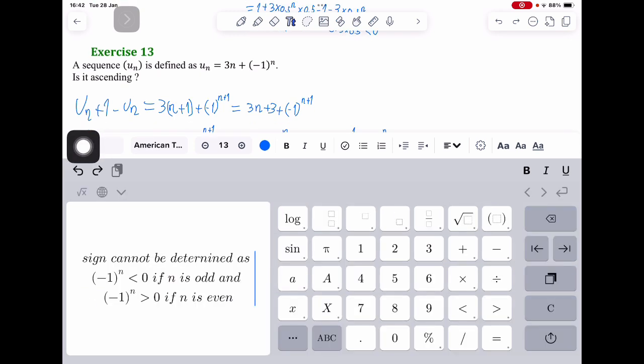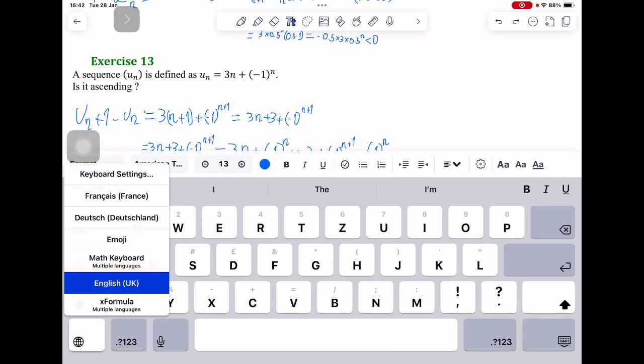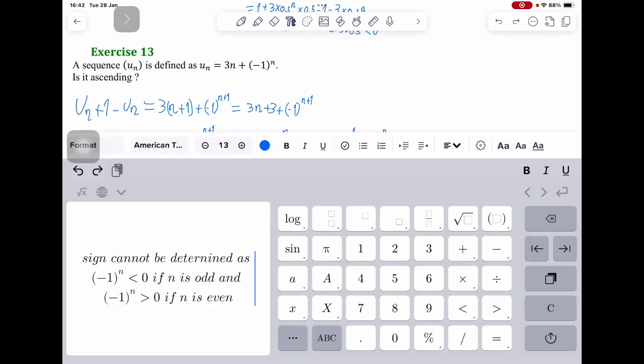So if I type on my keyboard, I can choose, you can see at the bottom here, I can choose different keyboards, but I want the one that's called X formula.